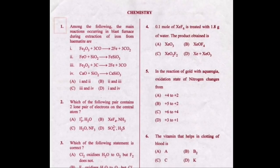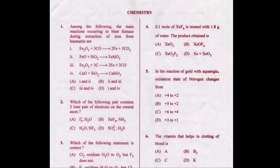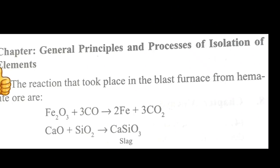In this question, the probability of the correct option being option A and option D — both are having a similar start. To decide the correct answer, we take the help of other options. Option C supports option D. Therefore our correct answer will be option D. If you're solving without tricks, imagine how much you have to do — you can verify your answer here.